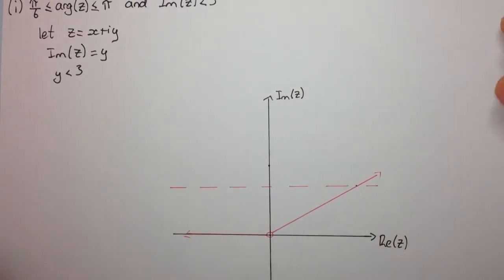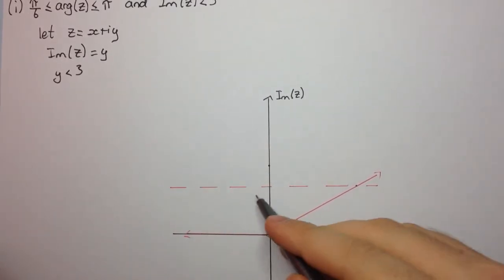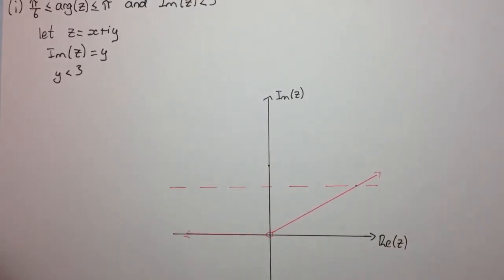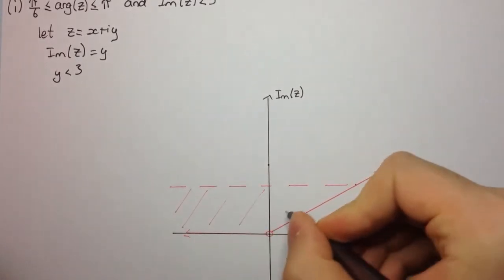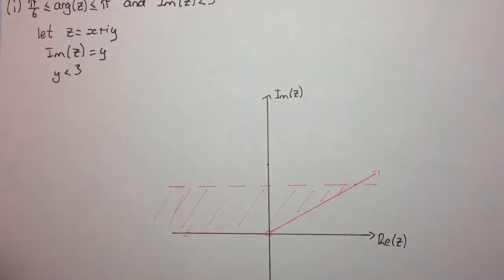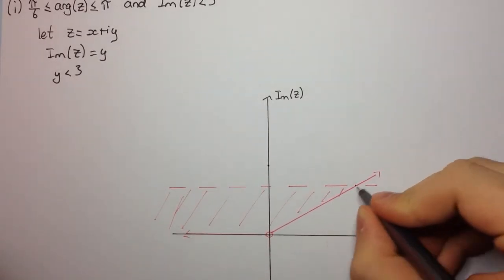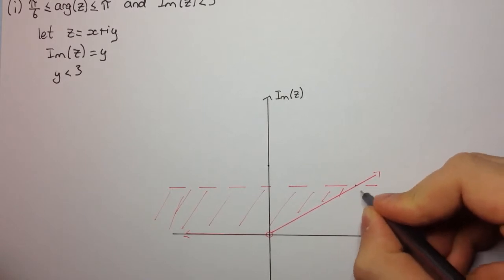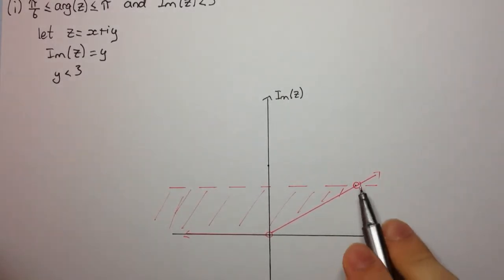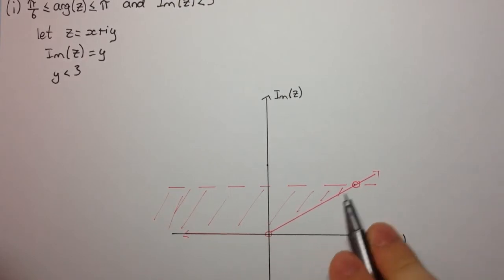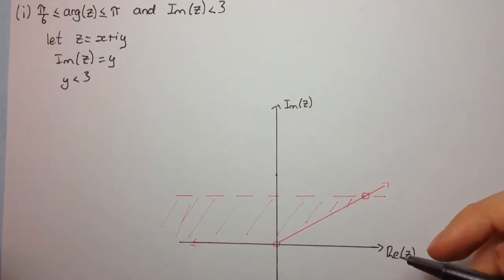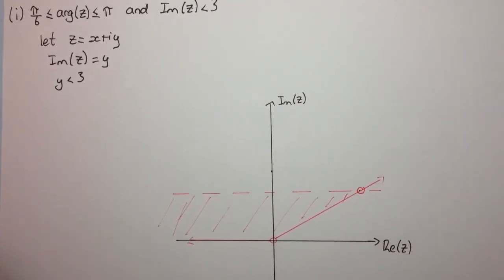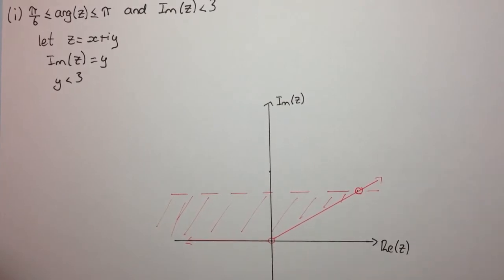We want all the points where y is less than 3 — all points underneath this dotted line. Now we can go ahead and shade in the intersection of the two regions — all these points in here, and out to infinity along here. One thing to be careful about: where a boundary case that's included overlaps with one that's not included, I would suggest putting an open circle here to indicate that this point — even though it belongs to the arg part — doesn't belong to Im(z) < 3. So in the intersection we can't include it.